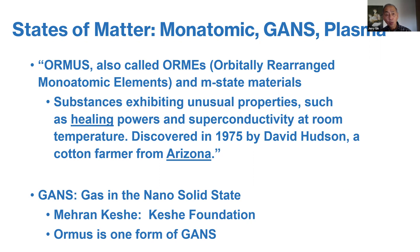Many of you may have heard of the term ormus or monatomic. Some of you may have heard the word GANs and plasma. Ormus has been known and was discovered in 1975 by David Hudson, the cotton farmer in Arizona. He came across materials that behaved very strangely and defied ways to measure it by normal conventional chemistry and physics techniques. The term ormus was coined, also sometimes called orbitally rearranged monatomic elements or the M state of matter. Keshe coined the term GANs — G-A-N-S — which stands for gas in the nano solid state. Ormus is nothing more than a form of GANs.